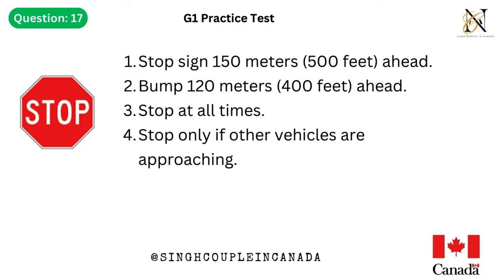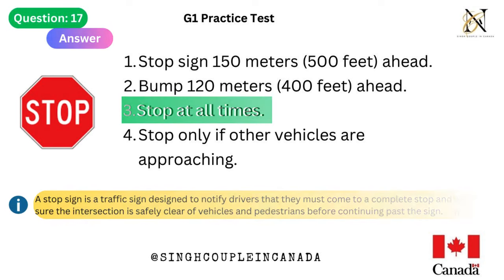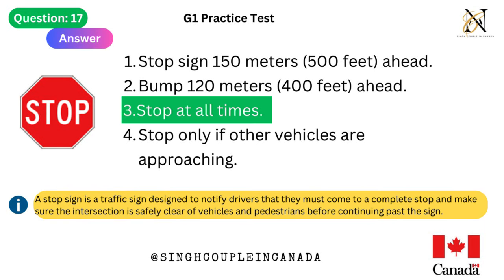Question 17. This traffic sign means: 1. Stop sign 150 meters (500 feet) ahead. 2. Bump 120 meters (400 feet) ahead. 3. Stop at all times. 4. Stop only if other vehicles are approaching. Answer is 3. Stop at all times. A stop sign is a traffic sign designed to notify drivers that they must come to a complete stop and make sure the intersection is safely clear of vehicles and pedestrians before continuing past the sign.